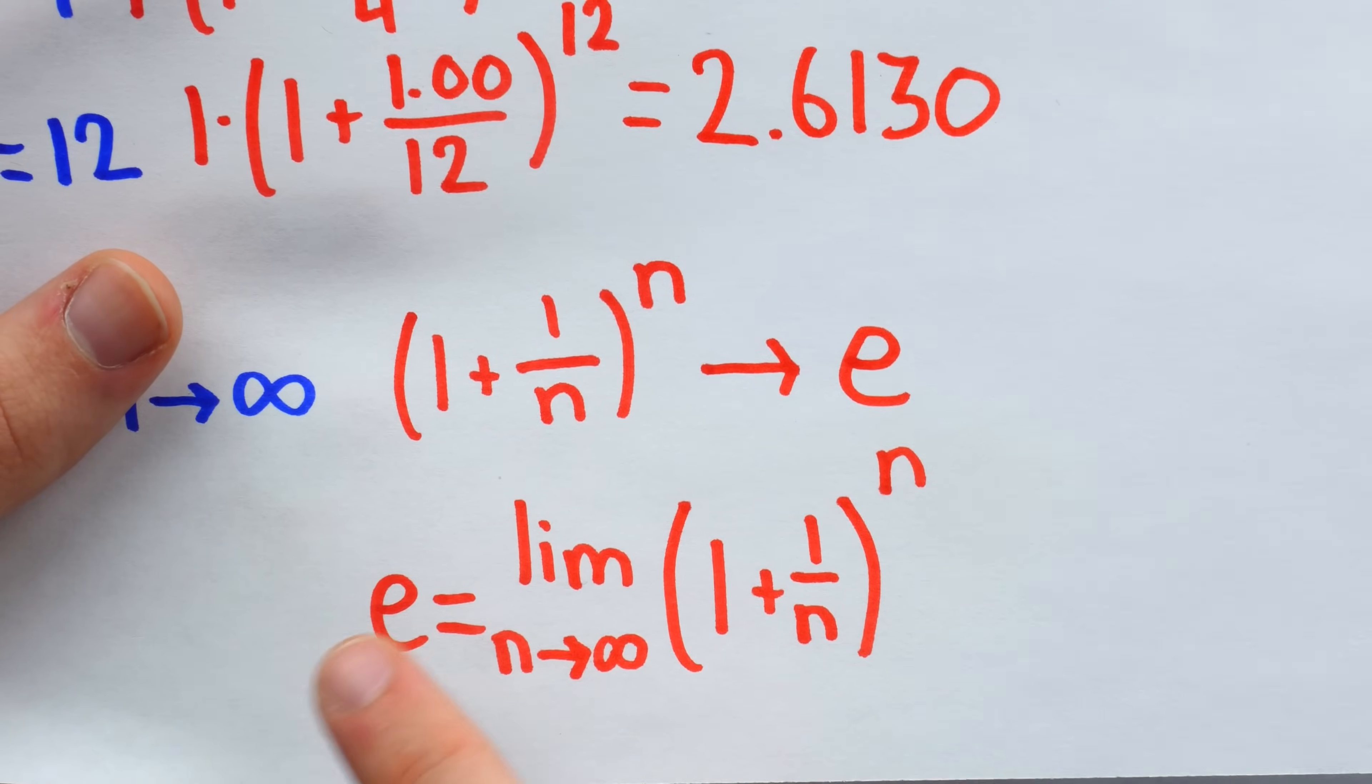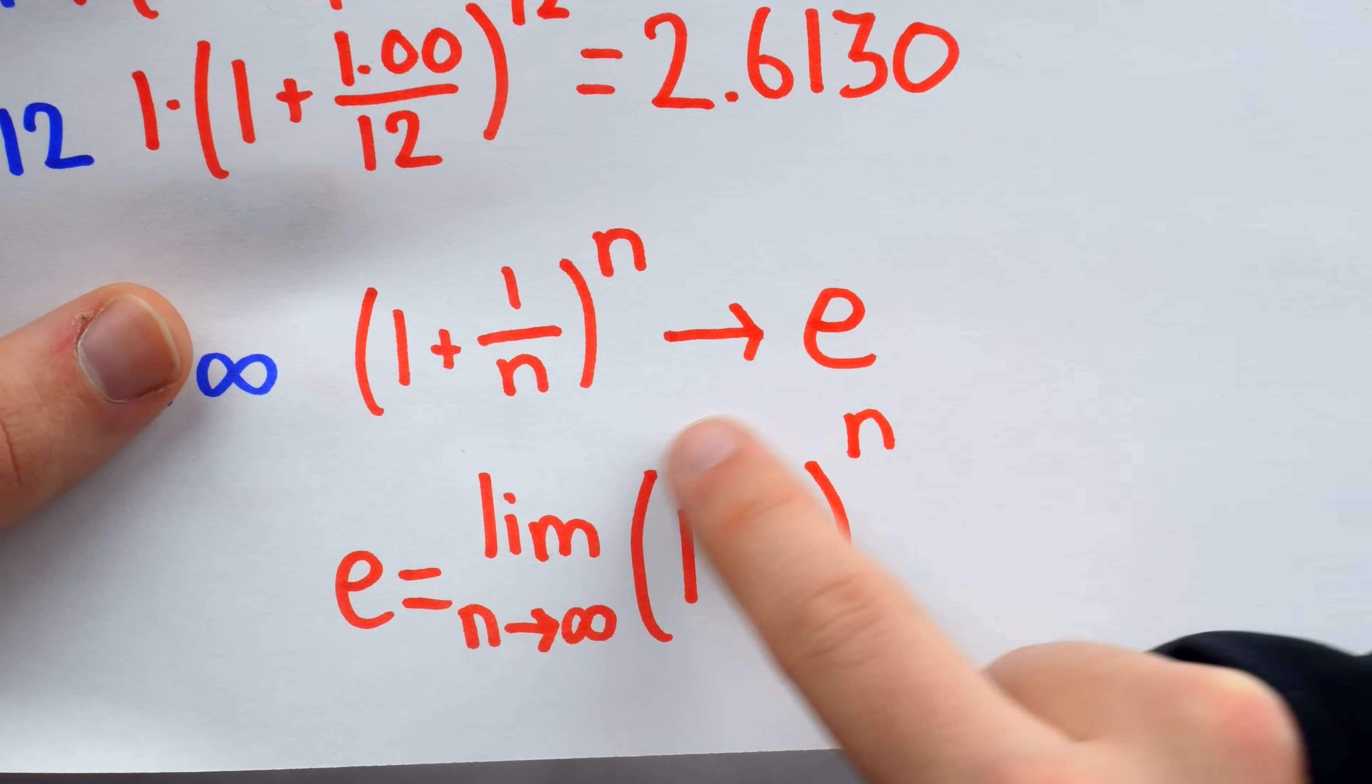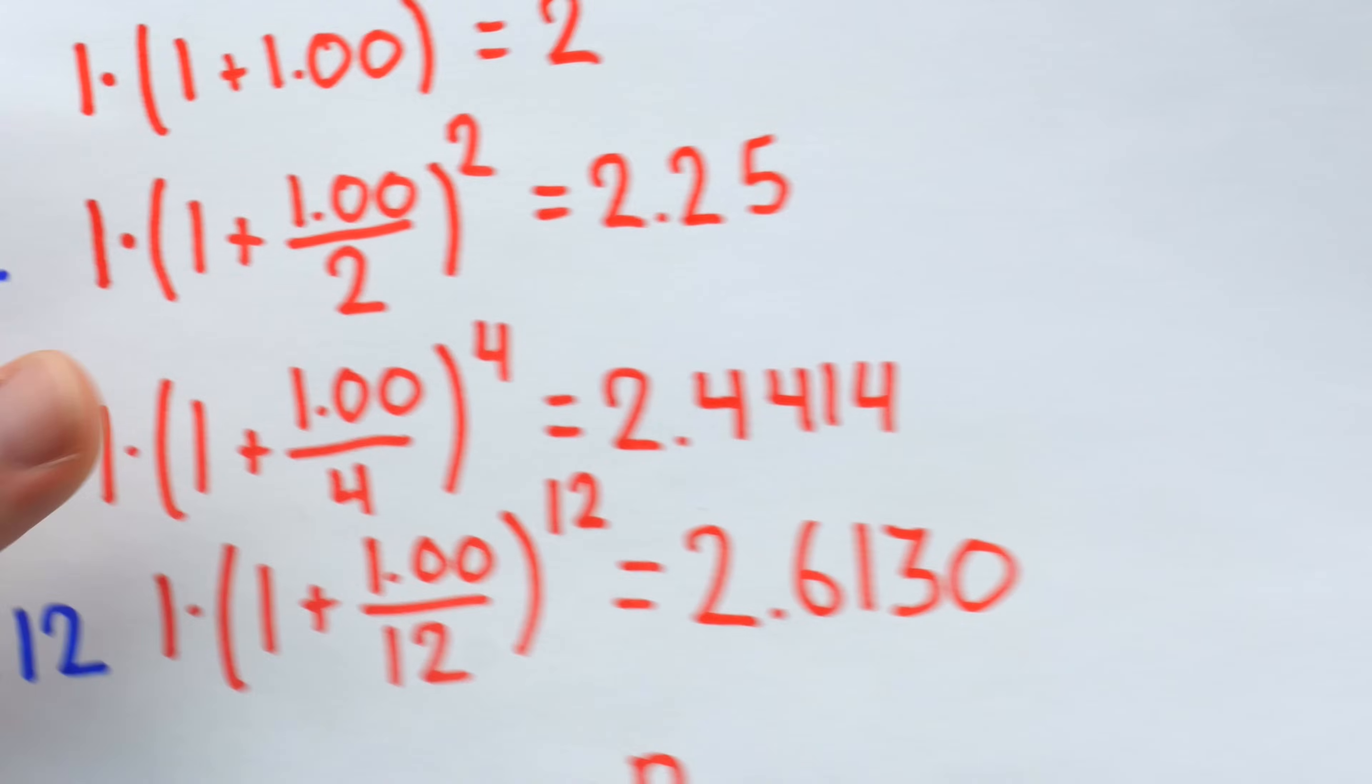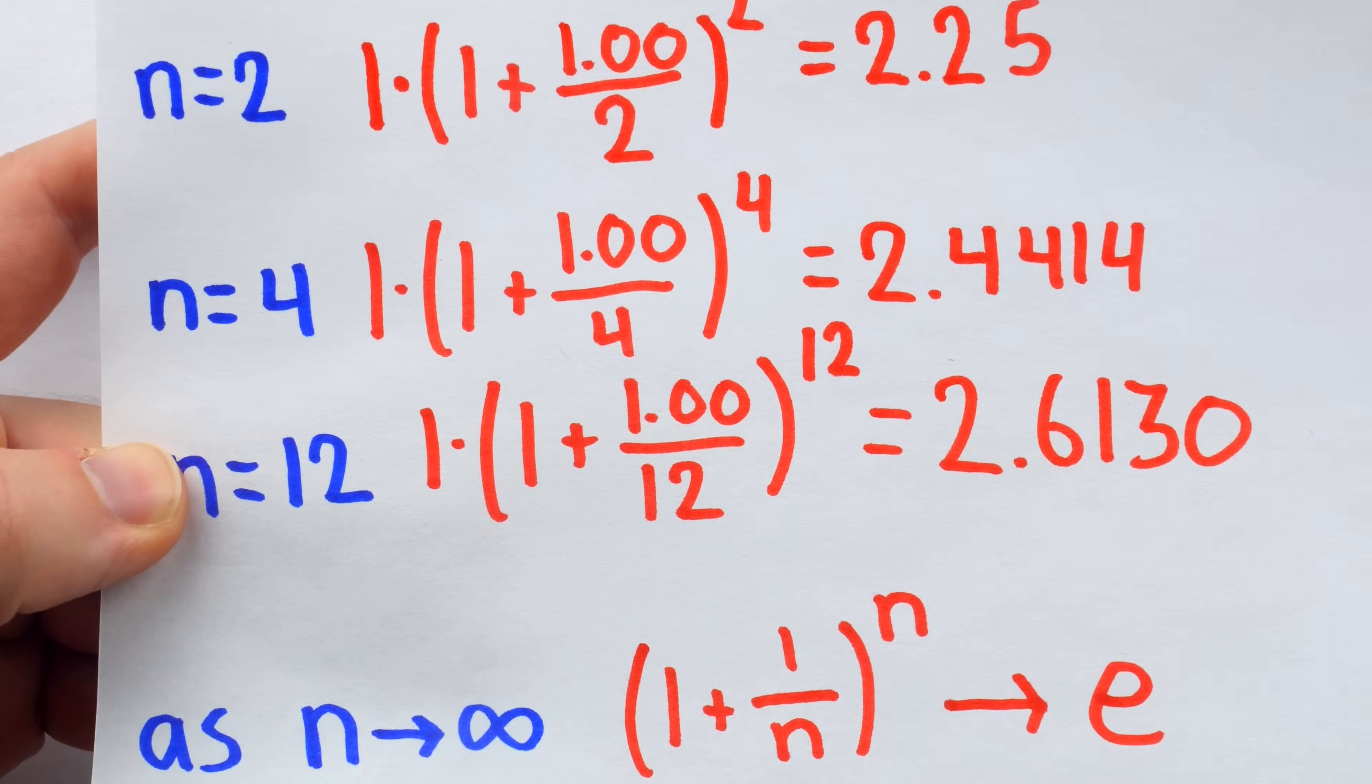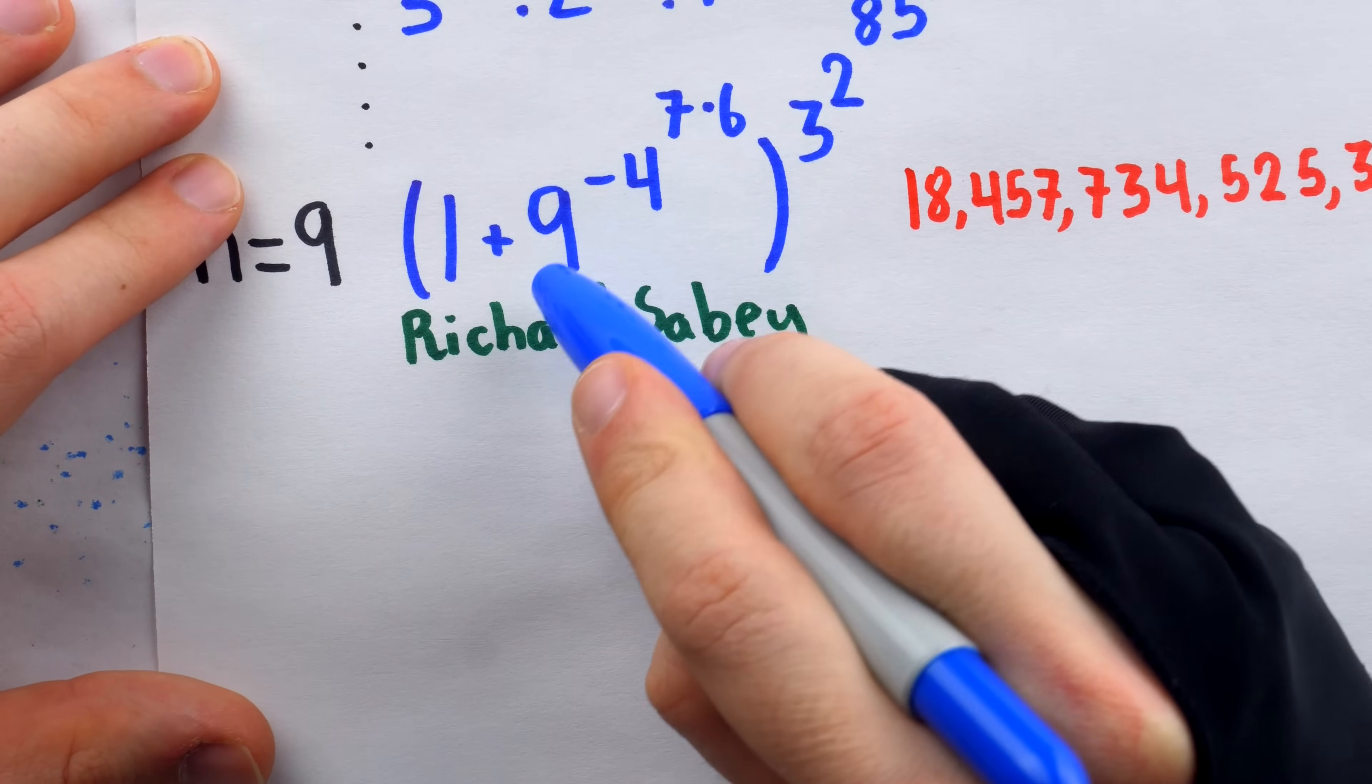You can see for the smaller n values, the numbers are not super close to e. But if we plugged in n equals 1000, for example, we'd have ourselves a pretty good approximation. Alright, now for the rewriting. Notice that this 9 has a negative exponent. So we're going to make the exponent positive by putting this thing in the denominator.